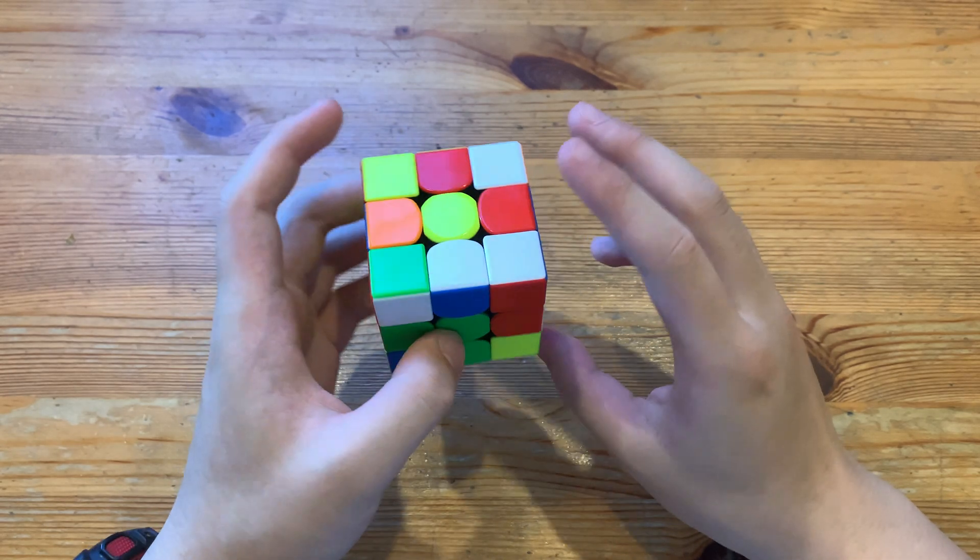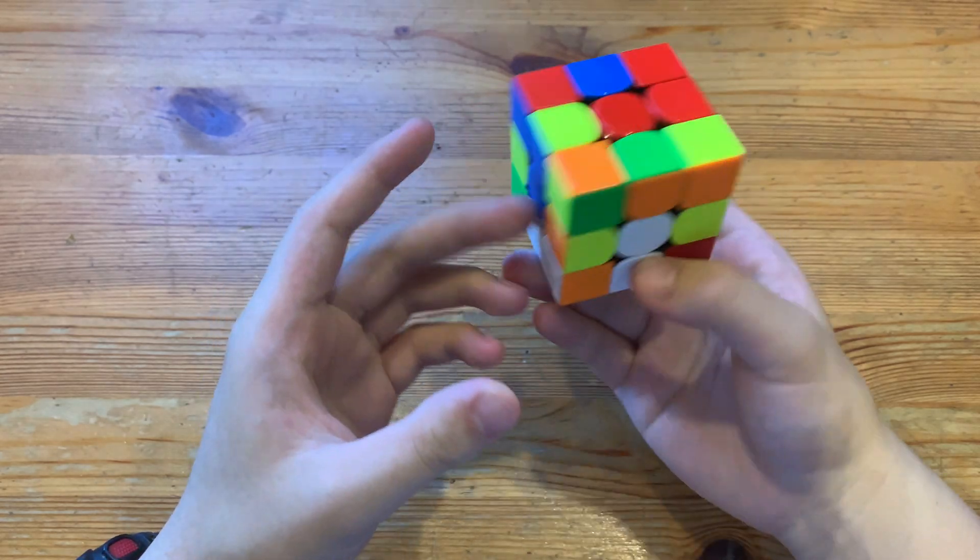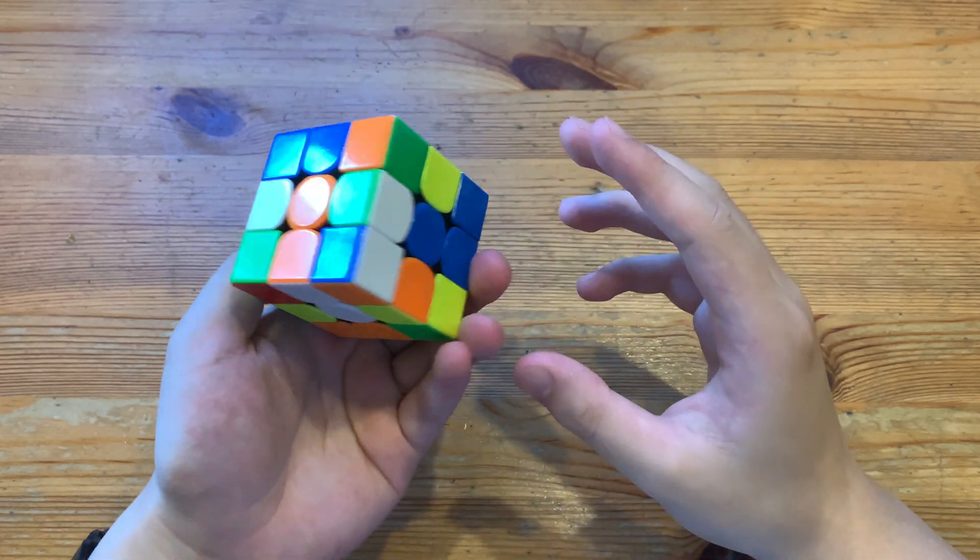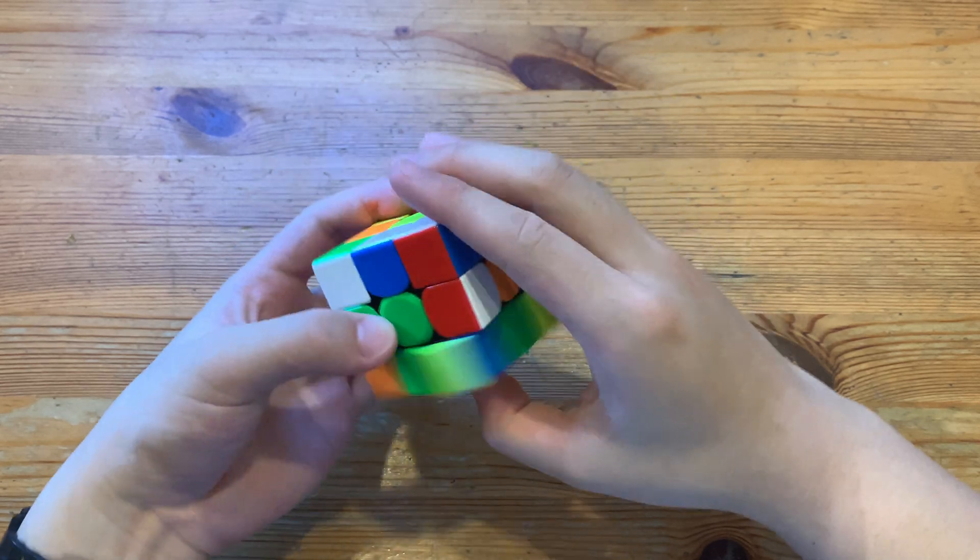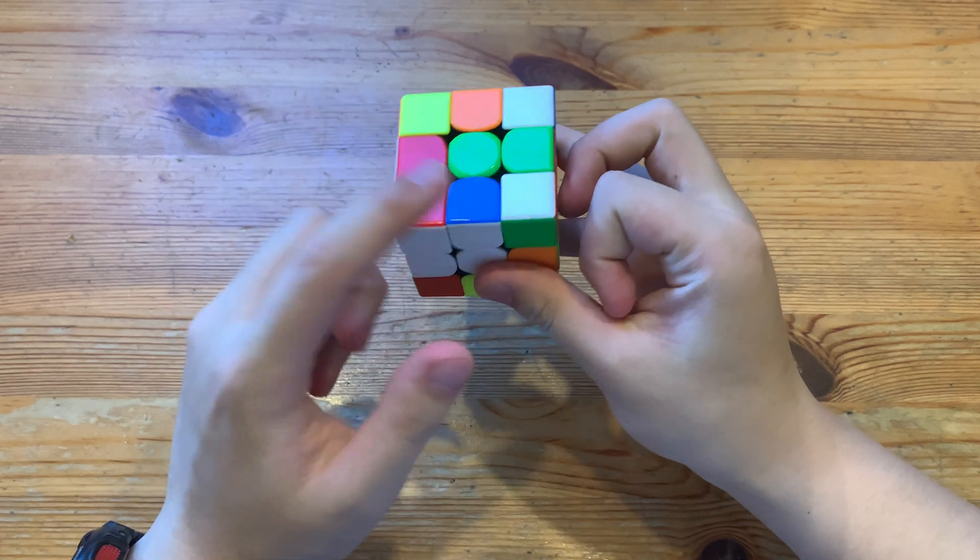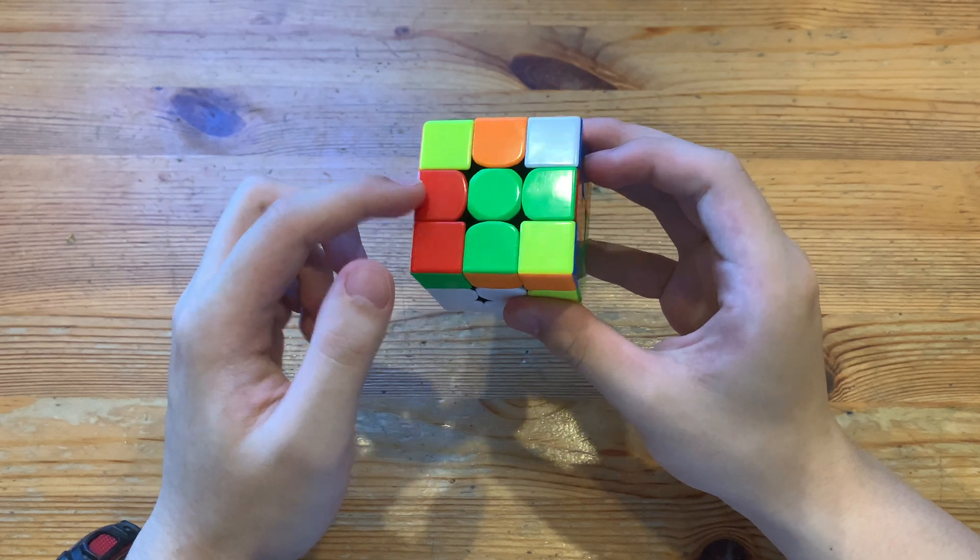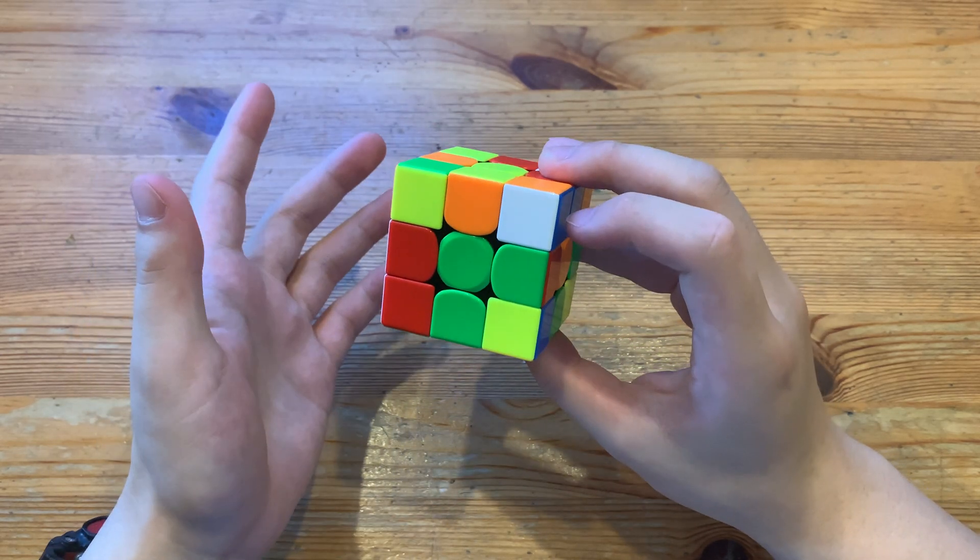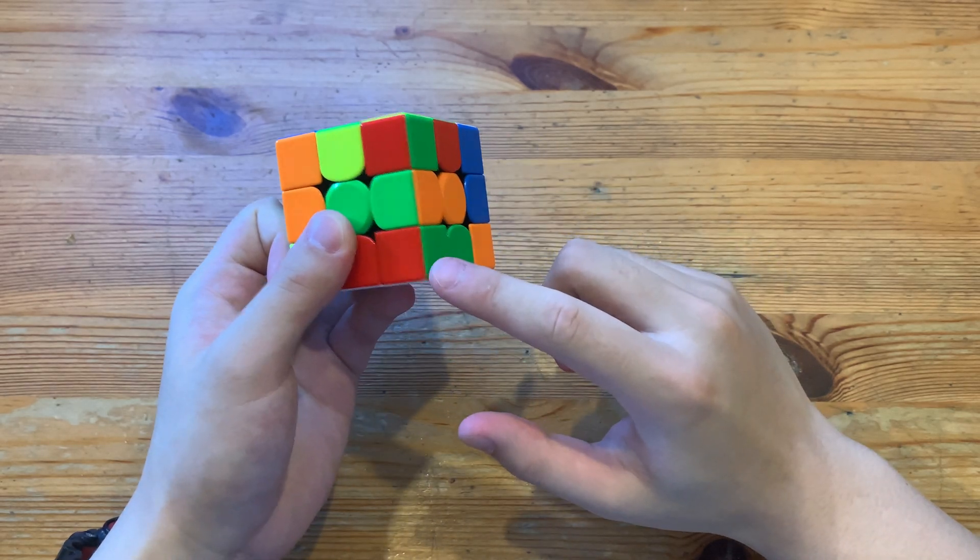Looks like a decent scramble, so what I'll do is d2 to put this cross edge over here, f2 to solve this cross edge, and then d prime to solve this. And then here, instead of doing f prime r, I'll do r f prime, so I can have this corner preserved.